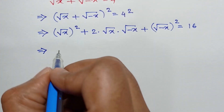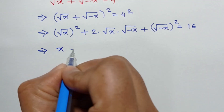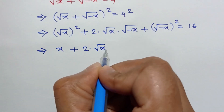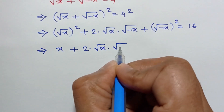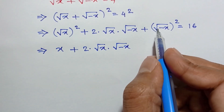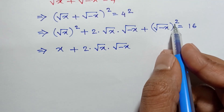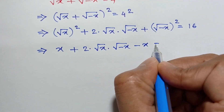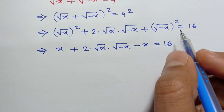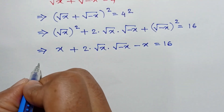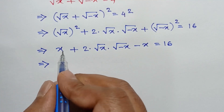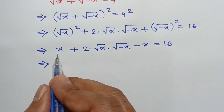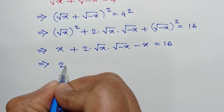Now, square root of x whole squared is equal to x, and square root of negative x whole squared is equal to negative x. So we have x plus 2 times square root of x times square root of negative x plus negative x is equal to 16. This x and negative x will cancel out.